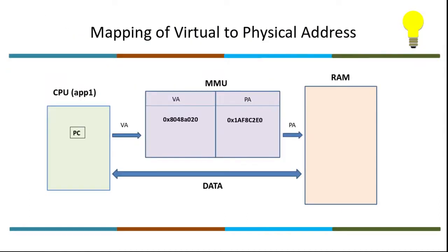This is the complete representation: app one generates a virtual address which maps to physical memory and fetches the data. App two generates the same virtual address, which maps to a different physical memory location and fetches its data value. This is how the virtual address gets mapped to the physical memory address.